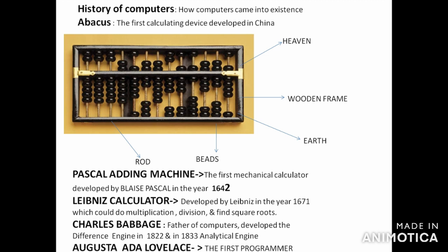Next comes the Pascal Adding Machine, developed by Blaise Pascal when he was just 19 years old. It used gears, wheels, and dials — like you can see in a taxi meter — and it performs addition and subtraction. After that came the Leibniz Calculator, which was an improvement over the Pascal Adding Machine. It could do addition, subtraction, multiplication, division, and also find the square root. It was developed by Leibniz in the year 1671.